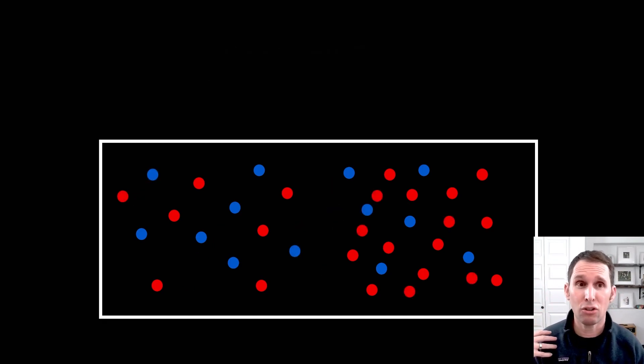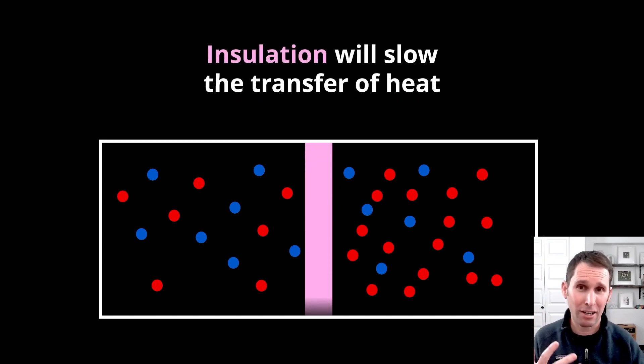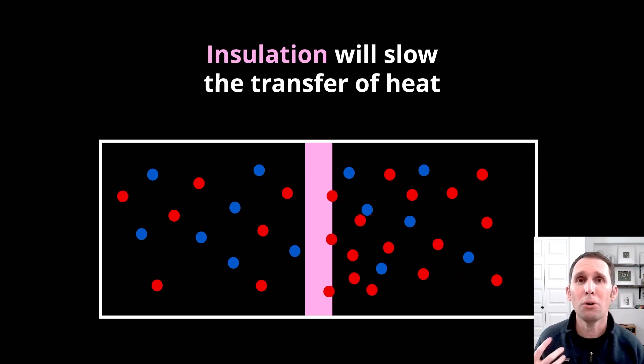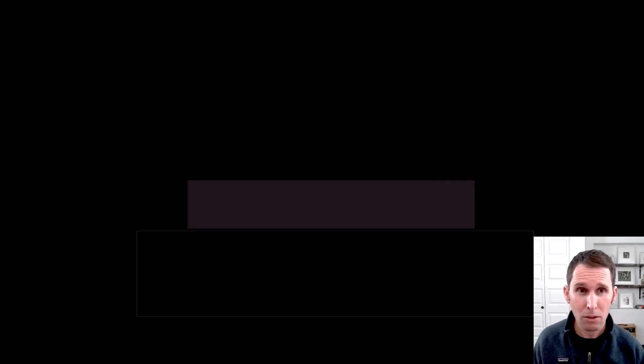Now, if you add a strip of insulation between that hotter area and the cooler area, the insulation will slow down the transfer of heat. It'll slow down the temperature equaling out between those two spaces. And that's what you want, because when you're heating up your home, you want to slow down the loss of heat. And in the summertime, when you're keeping it cool, you want to slow down the gain of heat.